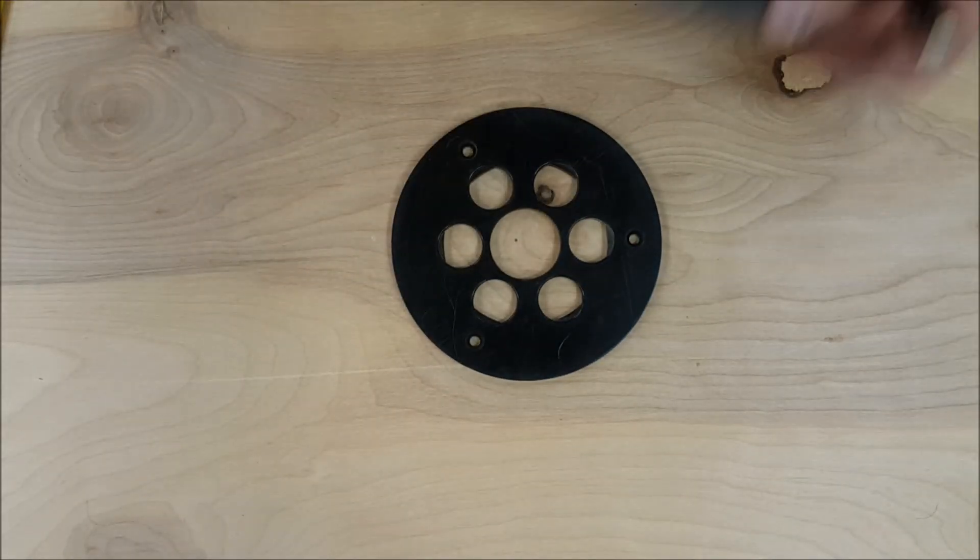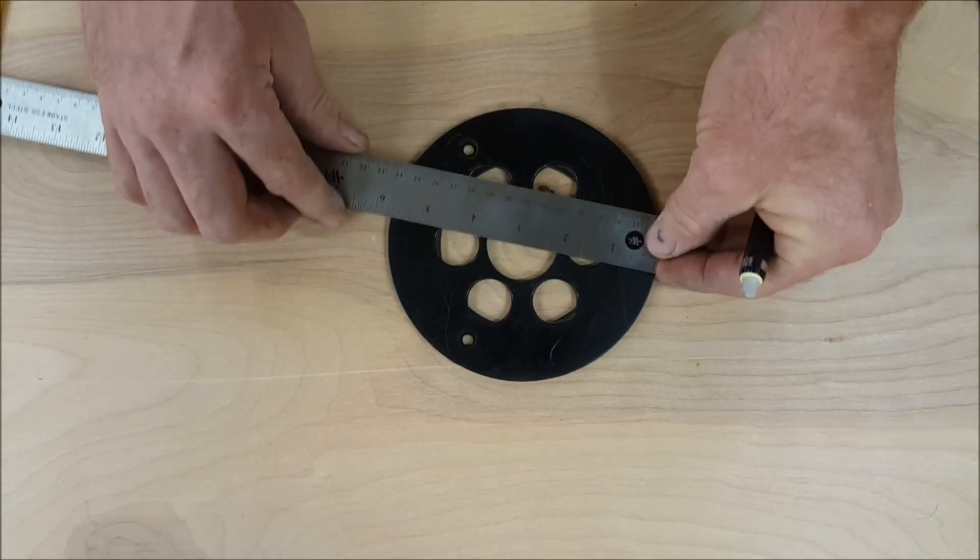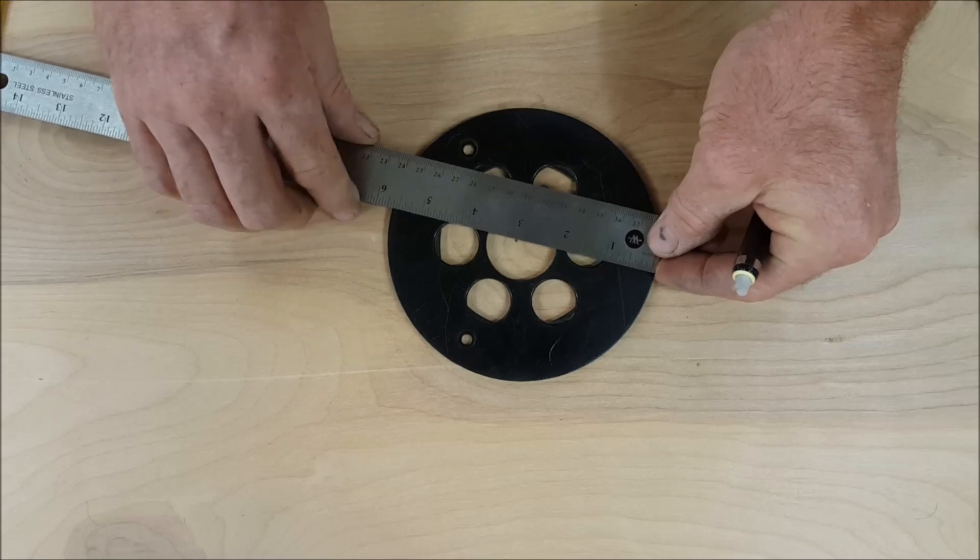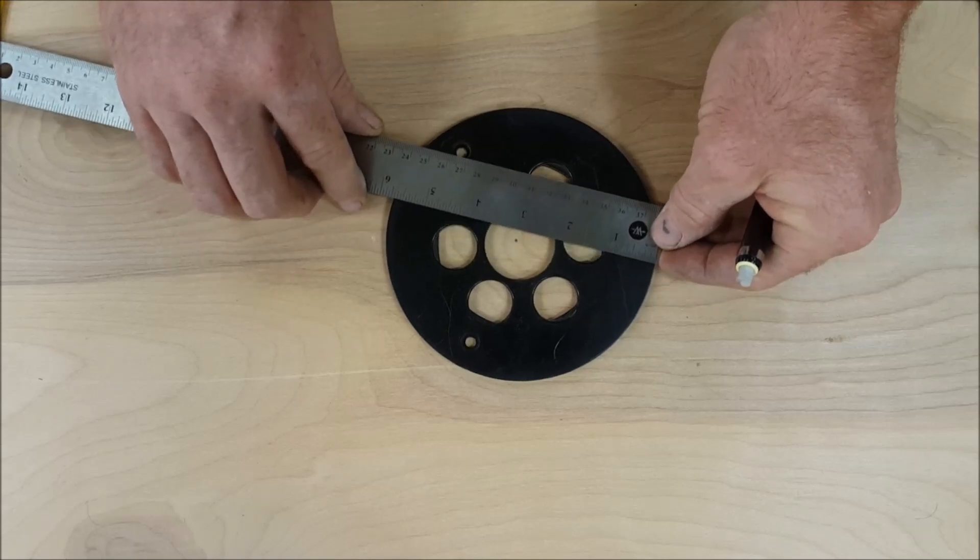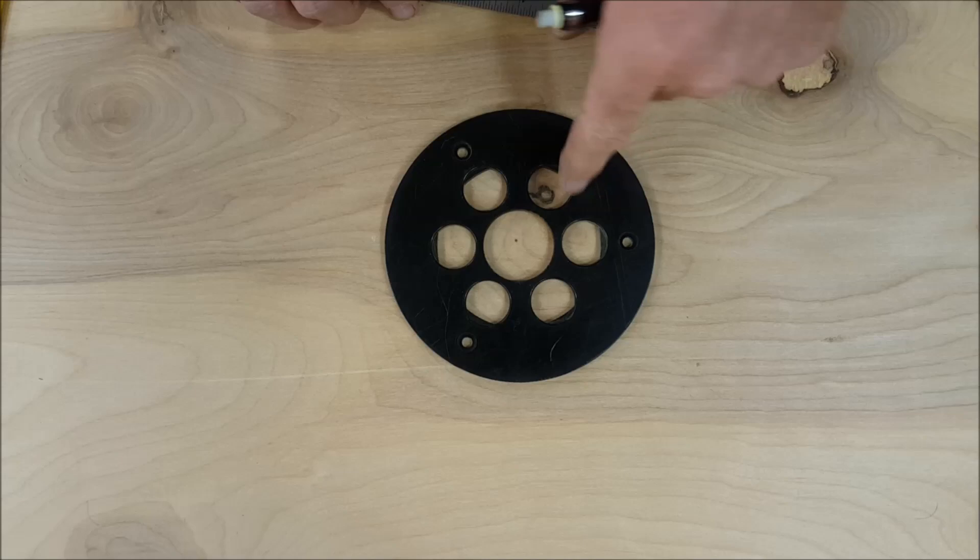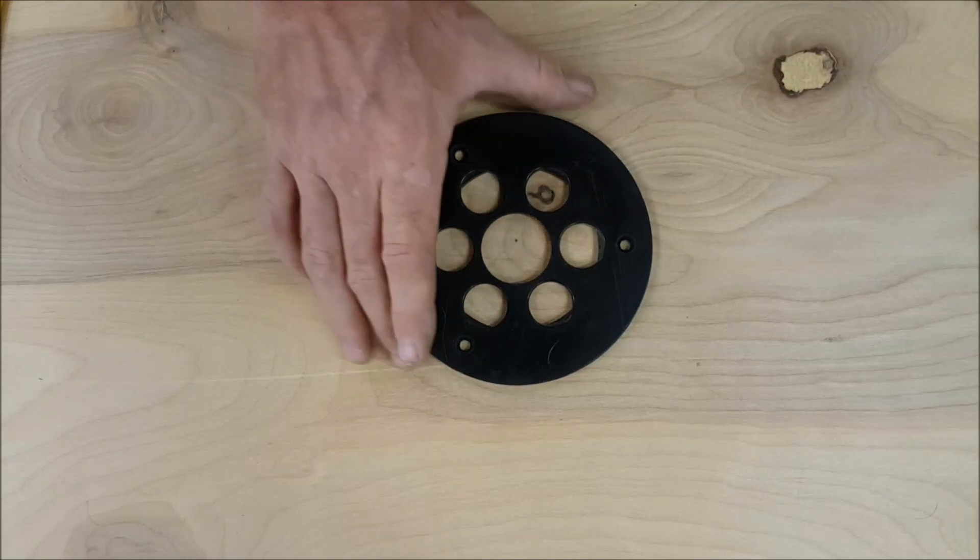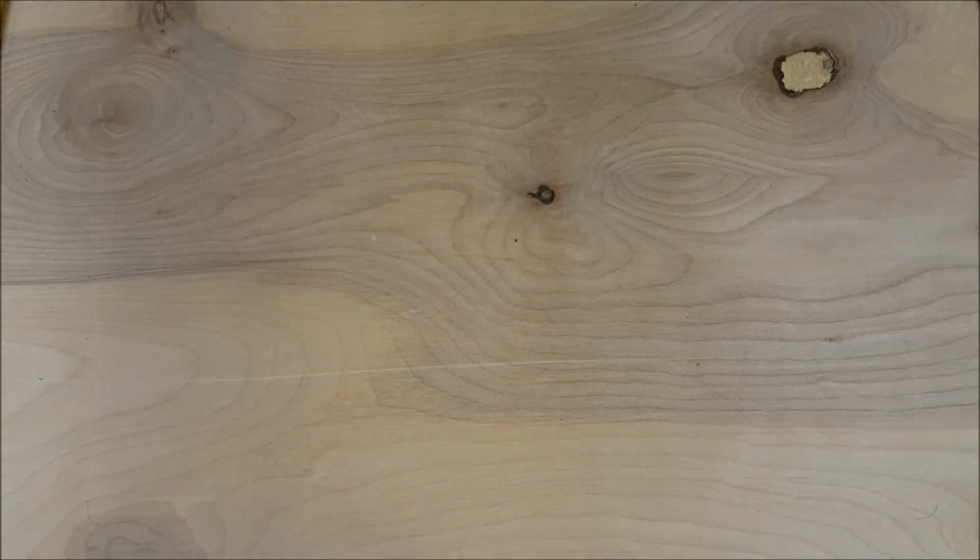Now one way you could do this is just measure the diameter, but it's kind of tough to find the largest width of that circle to determine the diameter. You could be off a little bit. This method I'm going to show you is going to be very accurate and you don't have to guess at your measurement.